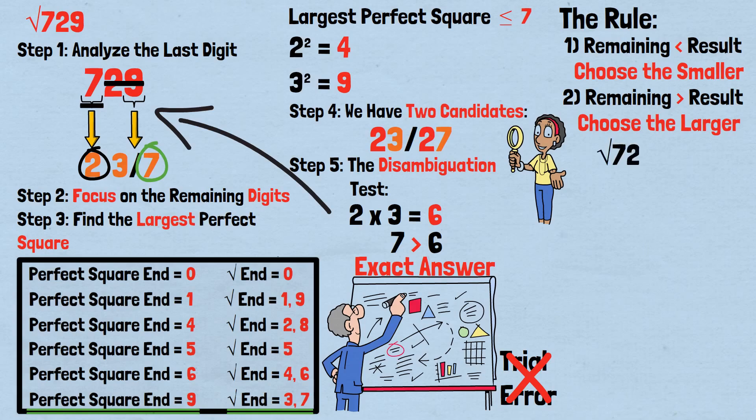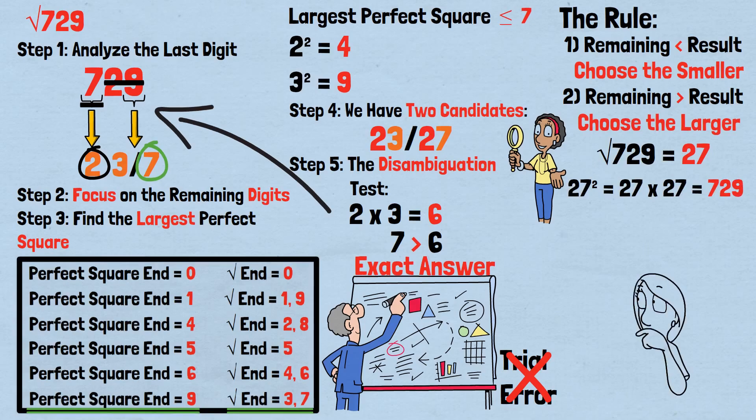Therefore, the square root of 729 is 27. Let's verify: 27 squared equals 27 times 27 equals 729. Exactly right.